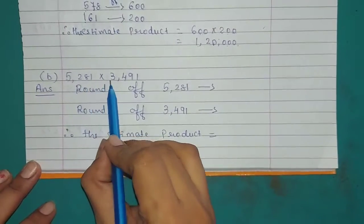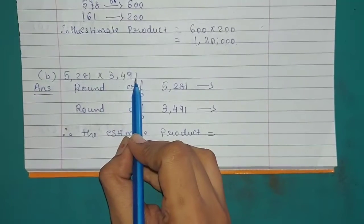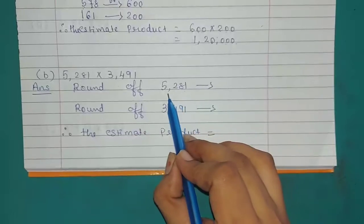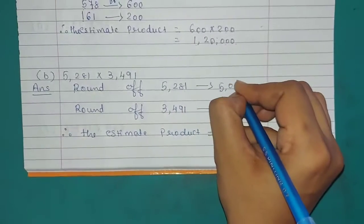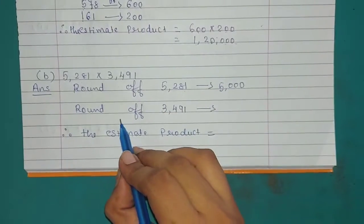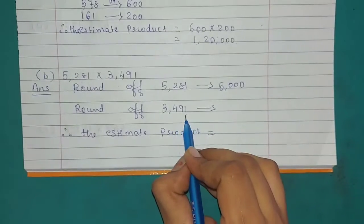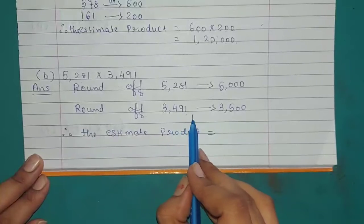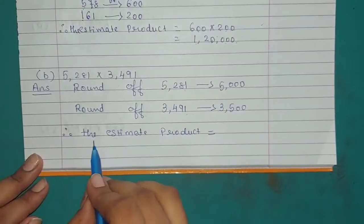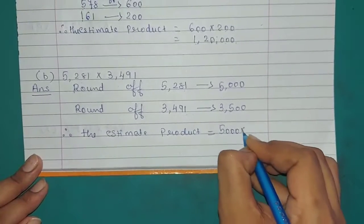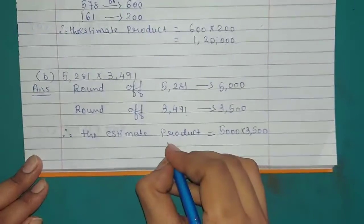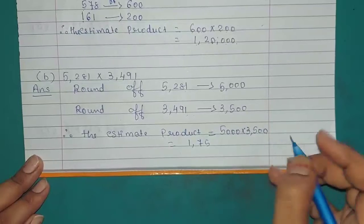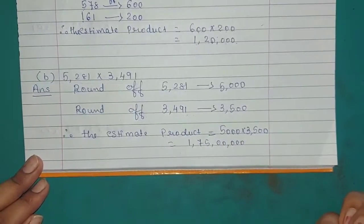Example B: 5,281 multiplied by 3,491. We have to round off each number. Rounding off 5,281, it is nearest to 5,000. Rounding off 3,491, it is nearest to 3,500. Therefore, the estimated product equals 5,000 multiplied by 3,500. Multiplying 35 by 5 gives 175, and we add 5 zeros. So the answer is 1,75,00,000 (1 crore 75 lakhs).